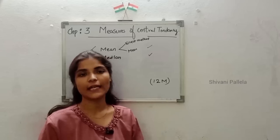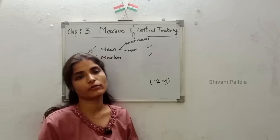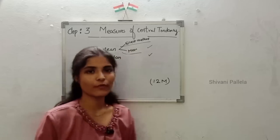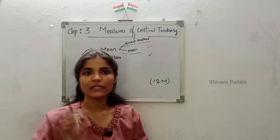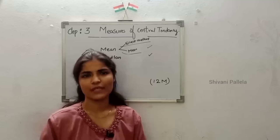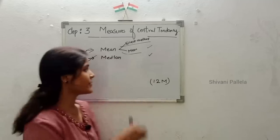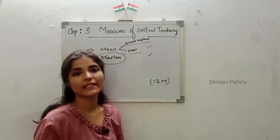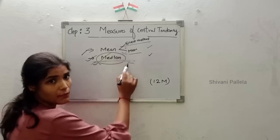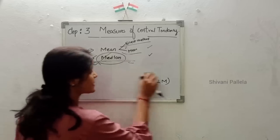Without any delay, just watch this video fully and you will get clarity to score good marks in business studies. In mean, you are having 2 methods: direct method and assumed mean method. They will give the data and tell you to find the mean, or ask you to find the arithmetic mean using the assumed mean. Concentrate on median — median is super easy and is asked many times in the question paper in Part B. Give more preference to median, but learn both concepts. Now we will discuss about the mean.